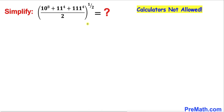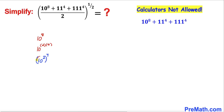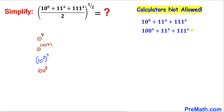Let's get started with the solution. Let's focus on the numerator — specifically 10 to the power 8. The exponent 8 can be written as 2 times 4, and by the power rule this becomes (10^2)^4. Since 10 squared is 100, we can write 10^8 as 100^4.